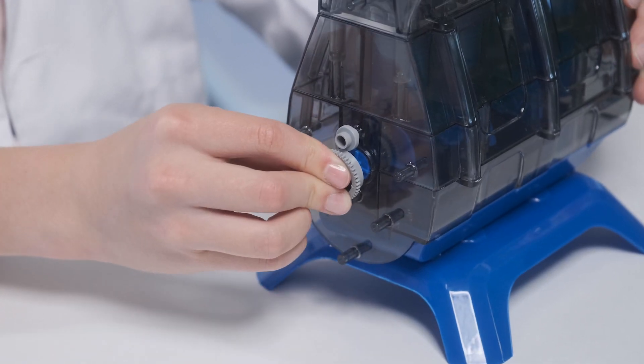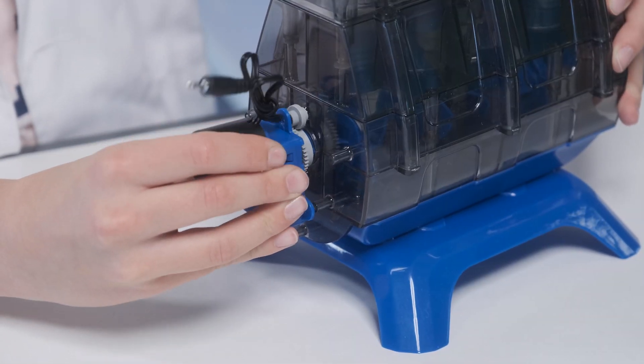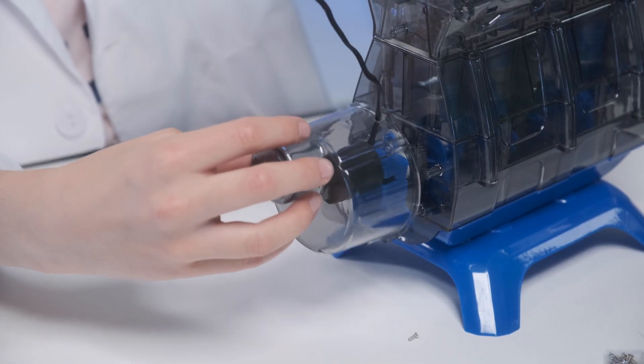On the other side, install the flywheel clutch and the drive module. The module should make contact with the clutch. Place the housing over it with the cord going through the port.